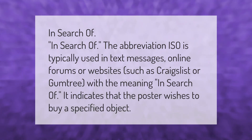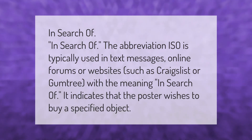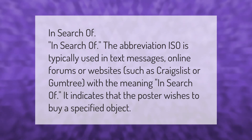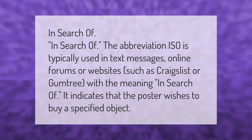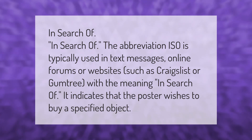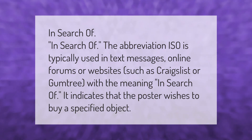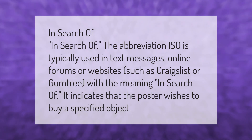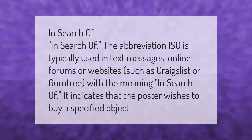The abbreviation ISO is also typically used in text messages and online forums or websites such as Craigslist or Gumtree with the meaning "in search of." It indicates that the poster wishes to buy a specified object.